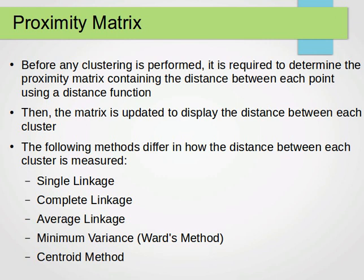The proximity matrix is a symmetric matrix. If we have n clusters, we have a matrix where the rows are cluster 1, cluster 2, all the way to cluster n, and the columns are the same. We fill in the matrix with the distances between each pair of clusters. The matrix is symmetric, meaning the lower half equals the upper half, and the diagonal values are zero.